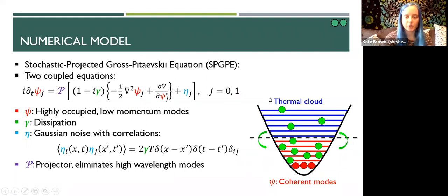We use a pair of coupled stochastic projected Gross-Pitaevskii equations. We've got one equation for each of our two different components. We use a single wave function psi to describe all of the highly occupied low energy coherent modes of our system and we treat all of the higher energy modes as a thermal bath. We have a parameter gamma in our equation and this controls the rate at which atoms move in and out of our coherent region from the thermal cloud. Eta is a Gaussian noise term which describes random fluctuations within our system and this has correlations which are dependent on gamma and also temperature. The noise of each of our two components is uncorrelated. Finally, we also have a projector and this just ensures that our wave function psi only includes modes of sufficiently low energy.